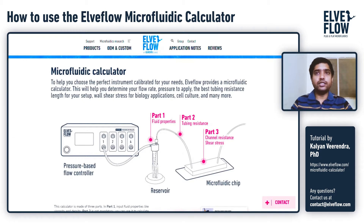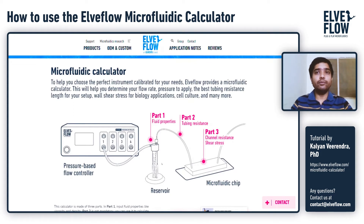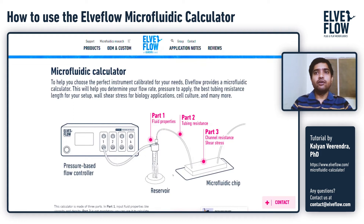The second most critical part of the system is the medium and its properties, like density and viscosity, which determine the flow regime of the overall system. For example, a less viscous fluid like water requires less force to be pumped into your chip compared to a more viscous fluid like oil or glycerol. Together, the density and viscosity of the medium play an important role in determining the flow physics of your experiment.